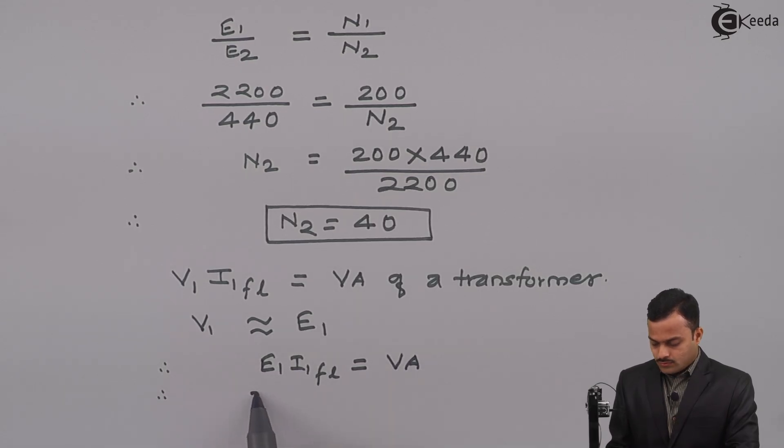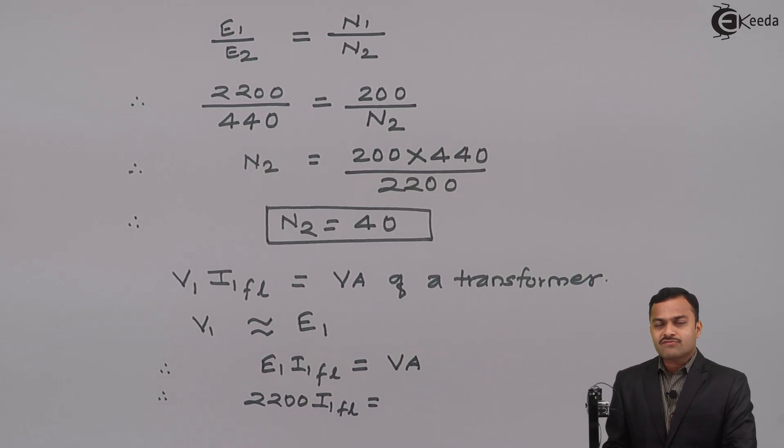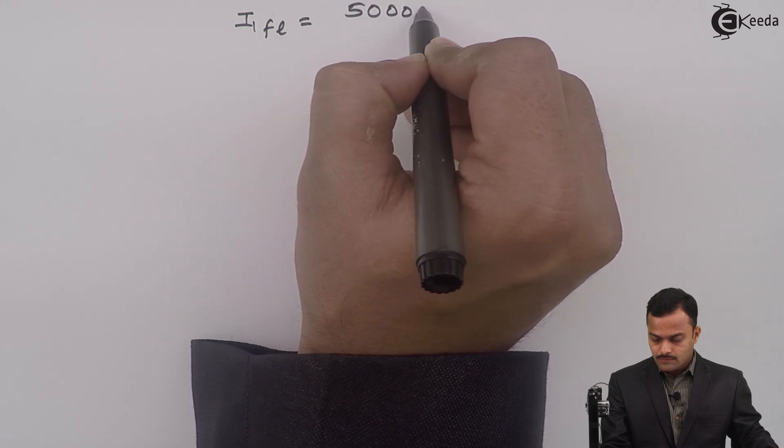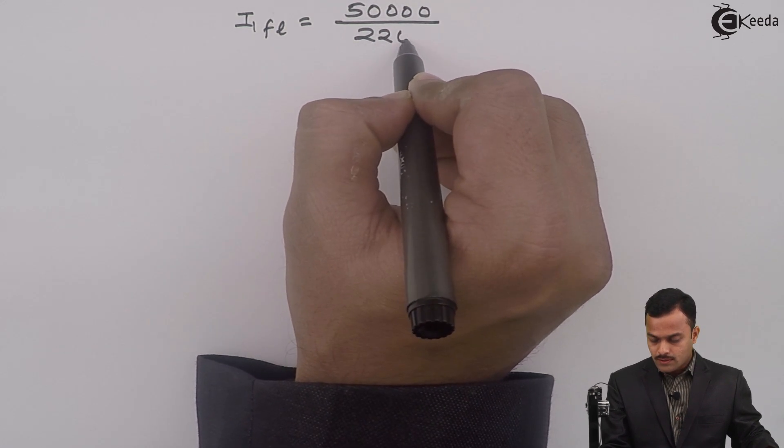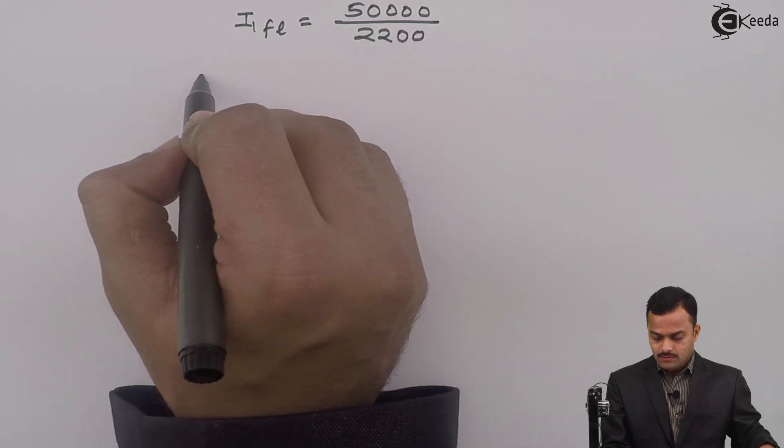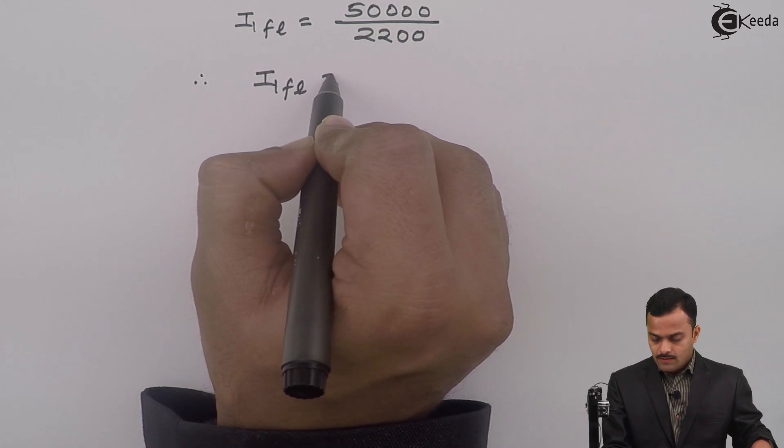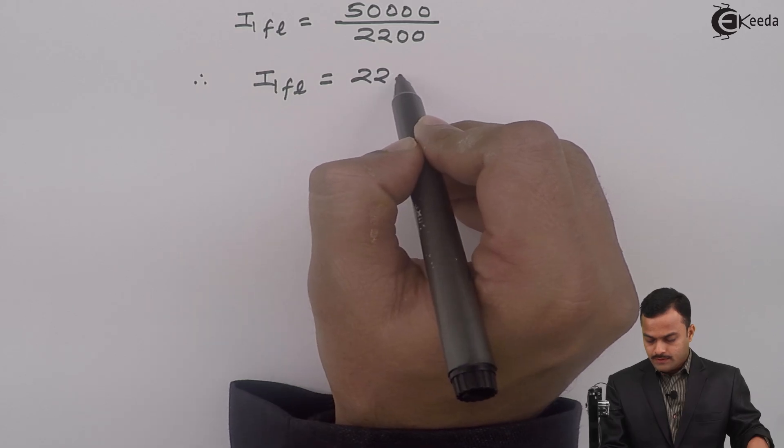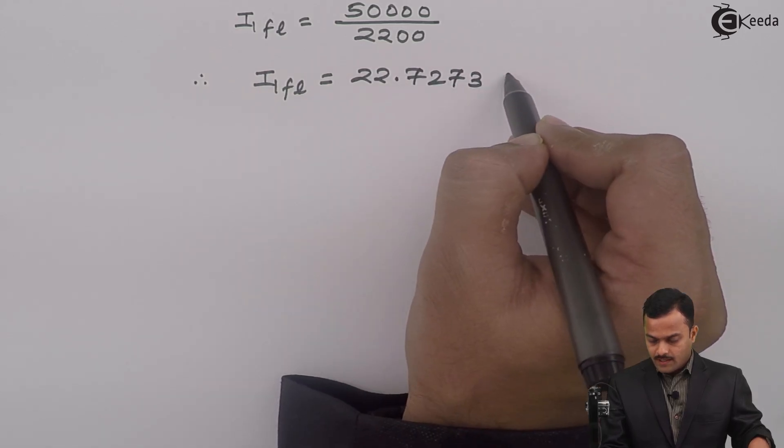E₁ is 2200. I₁FL you are supposed to calculate, and transformer VA is given as 50 kVA, so I can write 50,000 VA. From this I can get I₁FL which equals 50,000 / 2200. After solving, you will get primary side rated current equal to 22.7273 ampere.